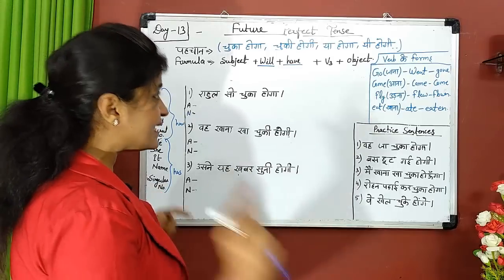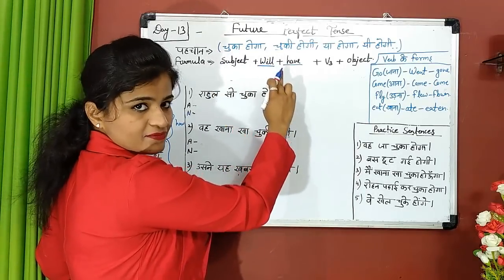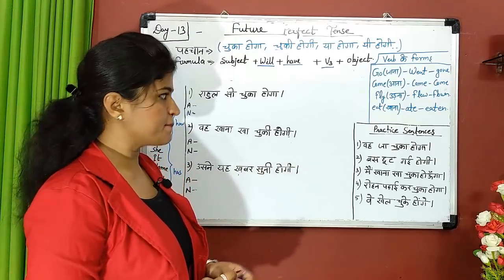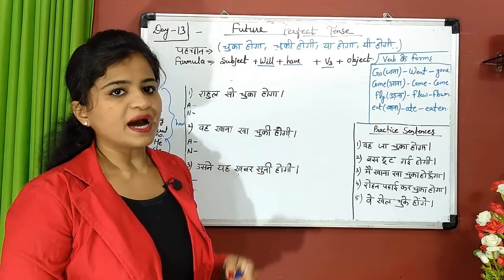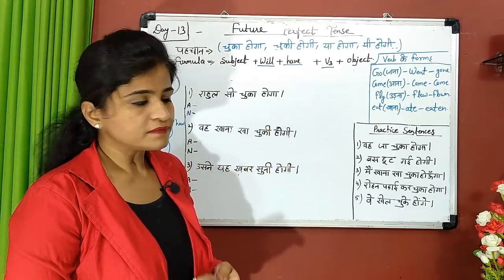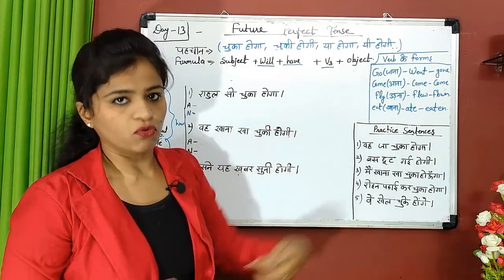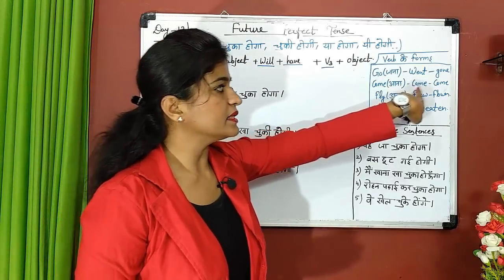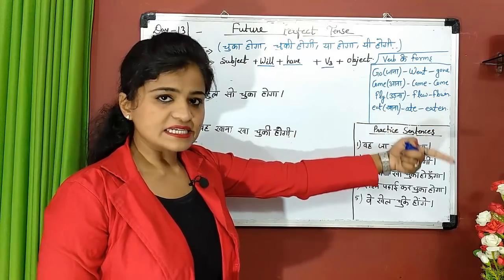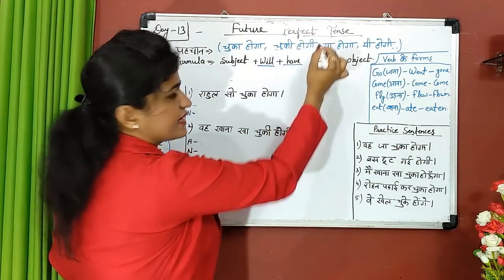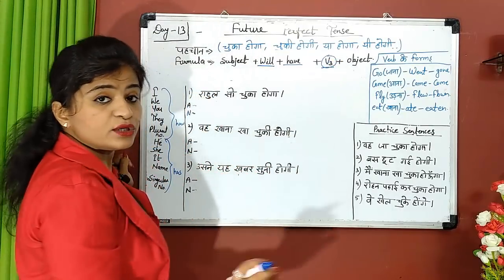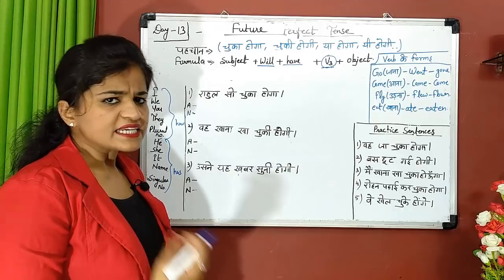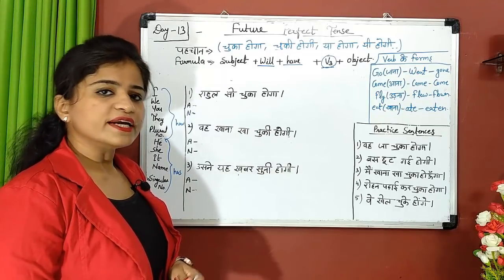So the formula is: subject + will + have + verb third form. 'Verb' means kriya — like rona, khana, gana. These all have three forms. For example, 'go' — go, went, gone. 'Come' — come, came, come. 'Fly' — fly, flew, flown. 'Eat' — eat, ate, eaten. In perfect tense, we always use the verb's third form. You should try to remember at least 50 to 100 verbs.